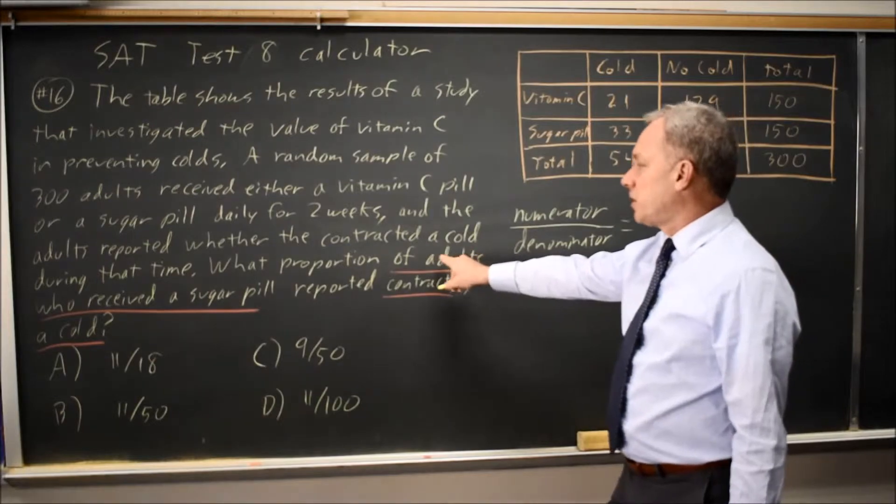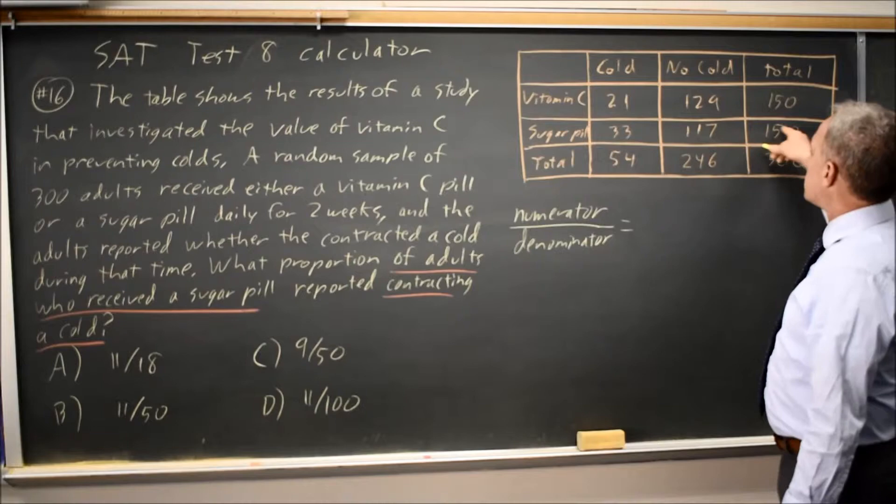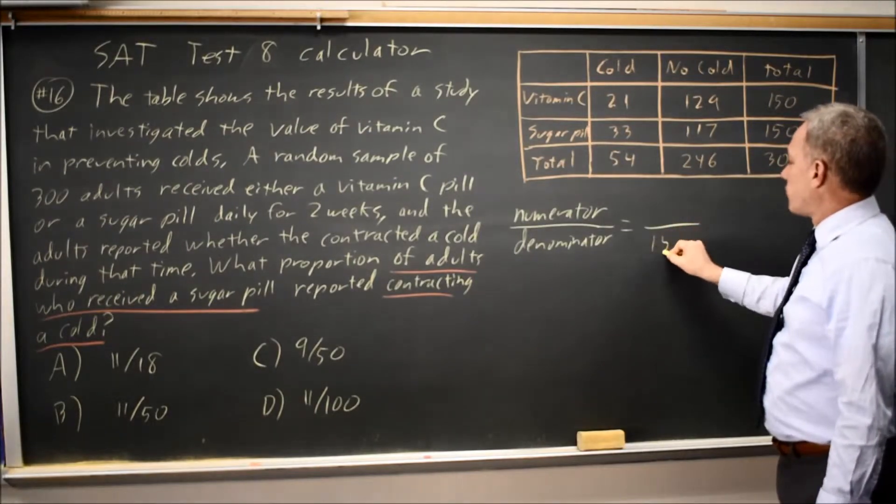So my denominator is adults who received a sugar pill, how many received a sugar pill, that's this row, the denominator is 150.